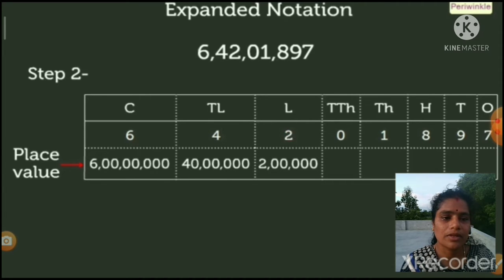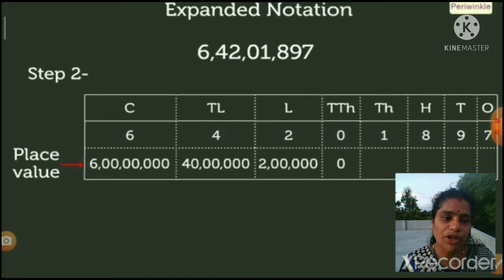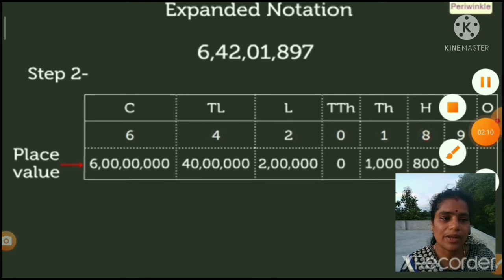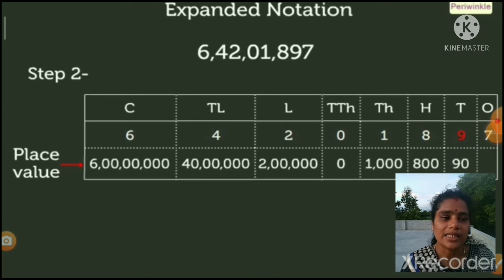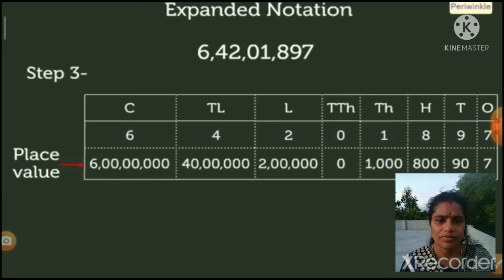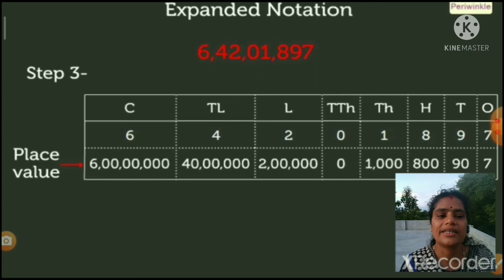Two is at the lakhs place, so the place value of two is two lakh. Zero is at the ten thousands place — the place value of zero is always zero. One is at the thousands place, so its place value is one thousand. Eight is at the hundreds place — eight hundred. Nine is at the tens place — ninety. Seven is at the ones place — place value of seven is seven.